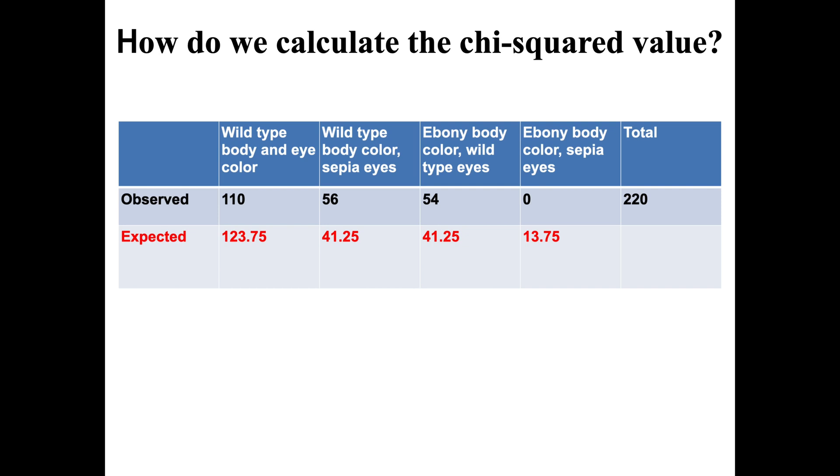3/16ths would have been the two that had the dominant and the recessive traits in the middle, and 1/16th would have been the ebony body and the sepia eyes.